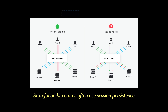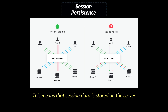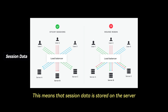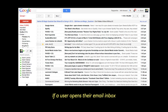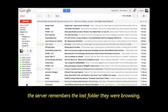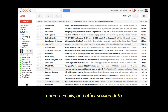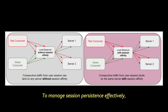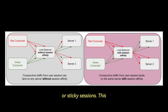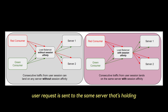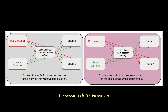Stateful architectures often use session persistence. This means that session data is stored on the server and tied to a unique identifier for each user's session. For example, if a user opens their email inbox, the server remembers the last folder they were browsing, unread emails, and other session data. To manage session persistence effectively, stateful systems often use server affinity, or sticky sessions, which ensures that each user request is sent to the same server holding the session data.